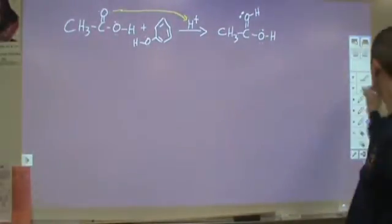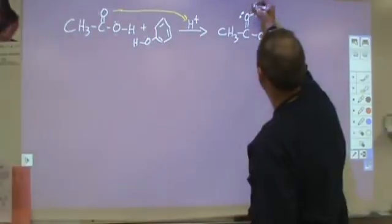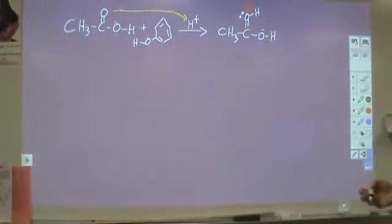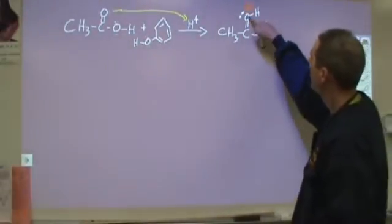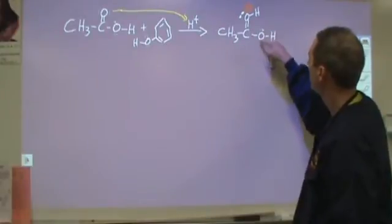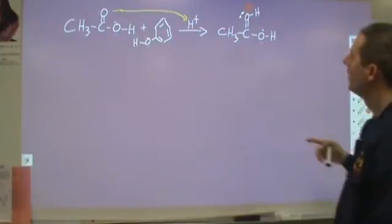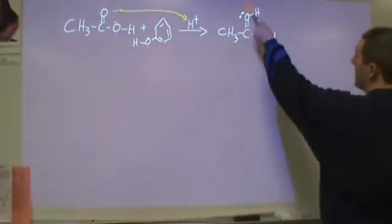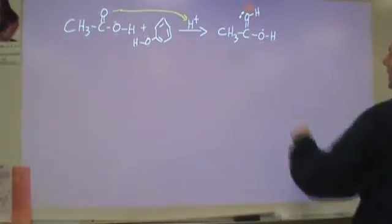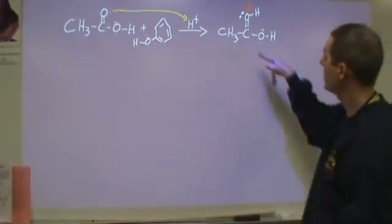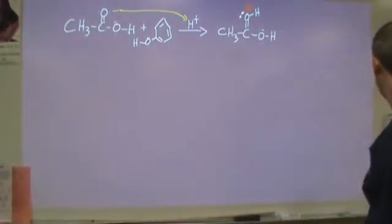That's got a positive charge on that oxygen there, which is not good, but there is some resonance where these two electrons can pop down to here, form a double bond, and those can kick out. So that positive charge really is being shared equally over those two oxygens, and there is a third resonance structure where we can form a carbocation.